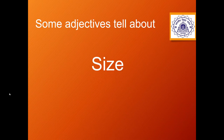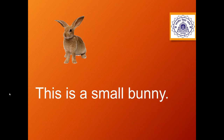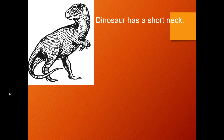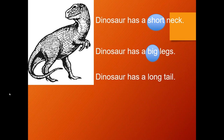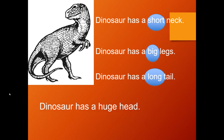Some adjectives also tell us about the size — whether something is too short or too long. For example, 'This is a small bunny' — small tells us about the size. 'Dinosaur has a short neck' — short tells us the size of the neck. 'Dinosaur has big legs' — big tells us about the size of the legs. 'Dinosaur has a long tail' — long tells us about the size of the tail. 'Dinosaur has a huge head' — huge tells us about the size of the head.